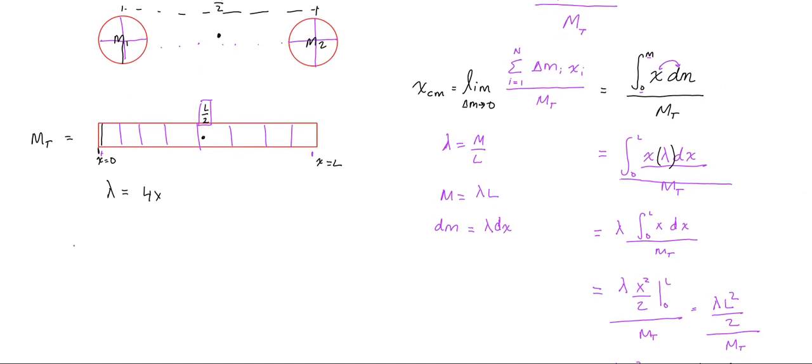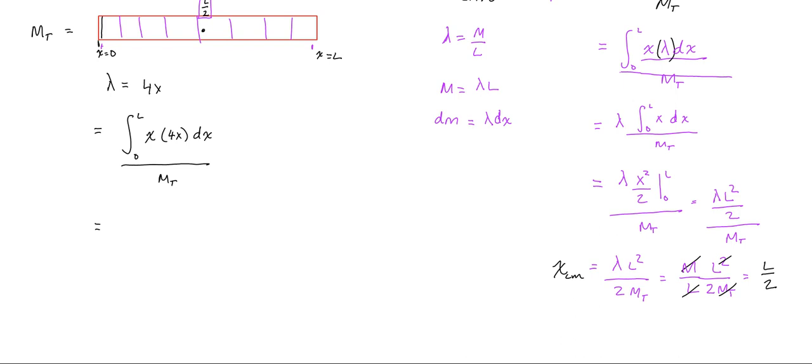If we use our integral expression to solve for this, we could calculate what that would be. I'm going to start right at this step, so I have x dm, but now it's λ dx, and λ = 4x. This is dx, all over m total. Now I'm not integrating just x, I'm integrating 4x squared. The 4 can go out here, but I still have to integrate x squared dx. What I'll find is 4x cubed over 3 from 0 to L, which gives me 4L cubed over 3 over the total mass.